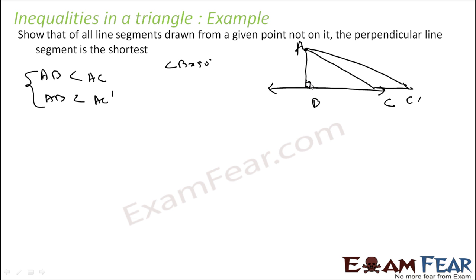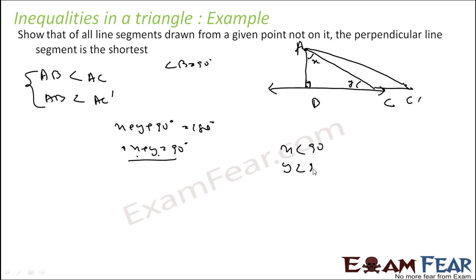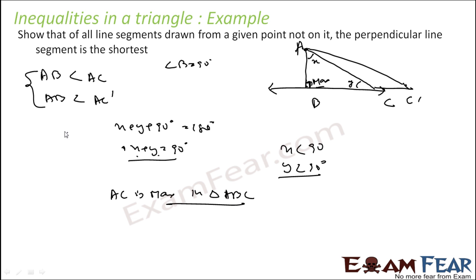Since this angle is 90, and if you assume the other angles are X and Y degrees, then X plus Y plus 90 equals 180 degrees, so X plus Y equals 90 degrees. That means X and Y are both less than 90. So the maximum angle is 90, meaning AC (and any other segment like AC') is always greater. The shortest side will always be AB — the perpendicular.